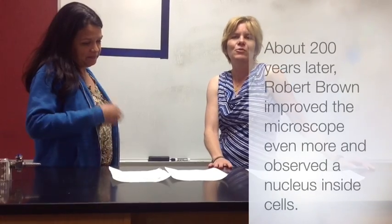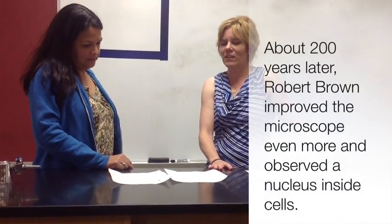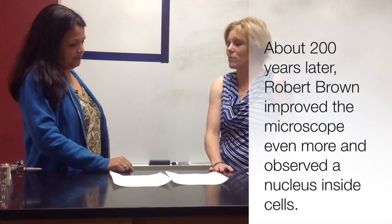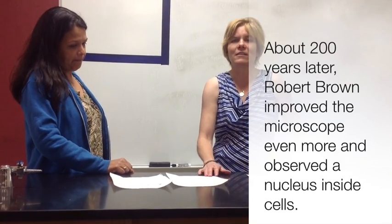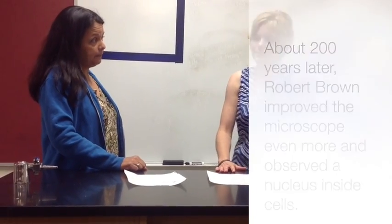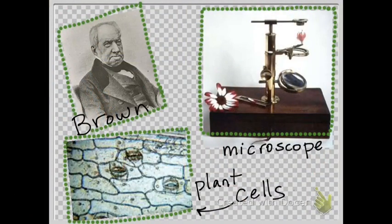Then it took about 200 years for another scientist to advance the discoveries of cells, which was Robert Brown. He saw that cells have a nucleus, which is obviously very important. Brown used his microscope to observe plant cells.